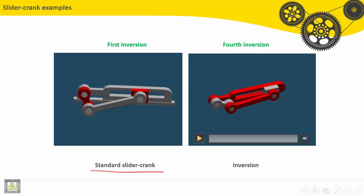But the cylinder or the link number one is fixed or grounded. Here, the fourth inversion in this animation. You can see the slider is grounded or fixed here.